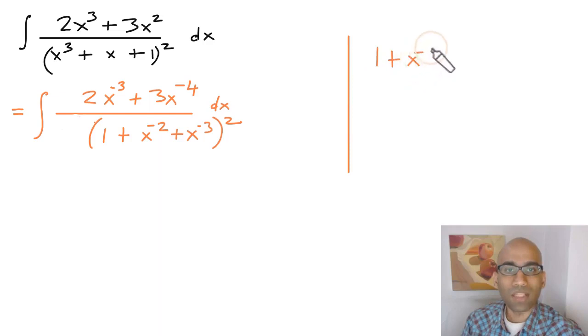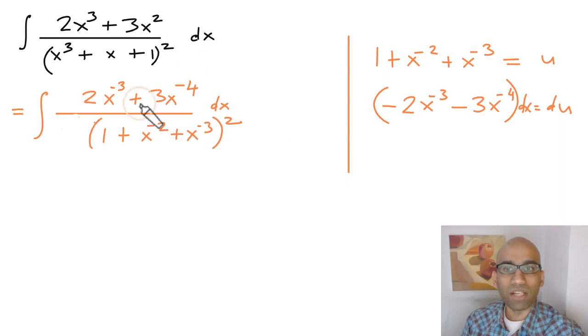So here we're writing 1 plus x power negative 2 plus x power negative 3 to be equal to u, and then we differentiate on both sides. We get negative 2 times x power negative 3 minus 3 times x power negative 4 dx is equal to du. And voila, that's pretty much this expression in the numerator. So this expression times dx will be equal to negative du.